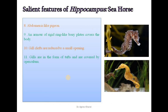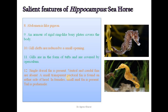Gill clefts are reduced to a small opening; gills are in the form of tufts and covered by an operculum. A single dorsal fin is present. Ventral and caudal fins are absent. A small transparent pectoral fin is found on either side of the head. In females, a small anal fin is present. The tail is prehensile. Males possess a brood pouch for carrying eggs until they hatch — this is a peculiar characteristic of the seahorse.